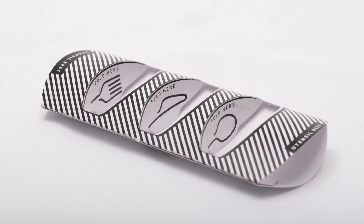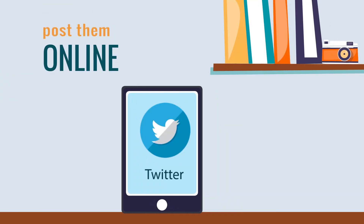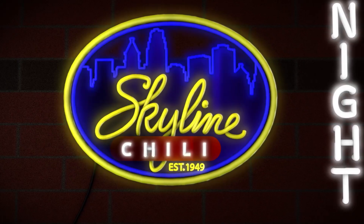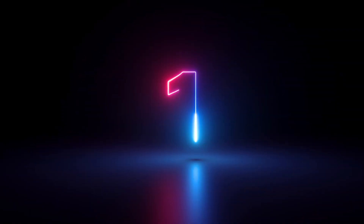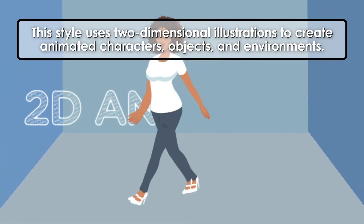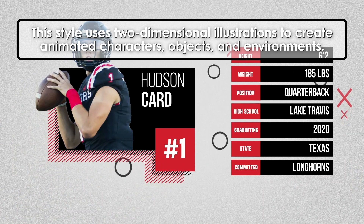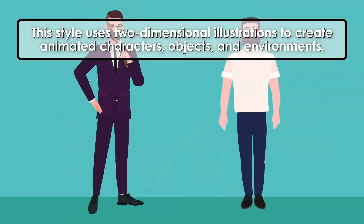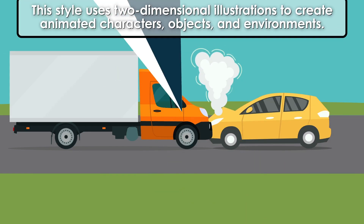There are several animation styles that are currently trending in advertising. 2D Animation uses two-dimensional illustrations to create animated characters, objects, and environments. It's a classic style that is widely used in advertising.